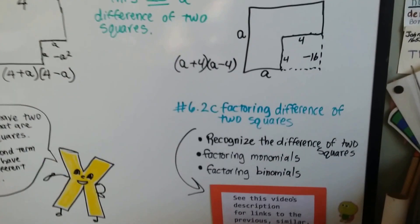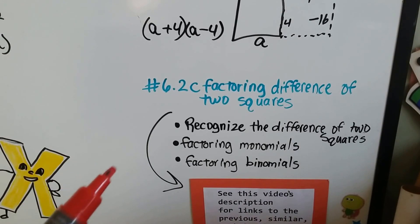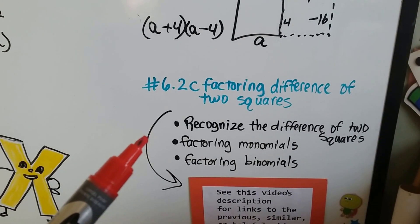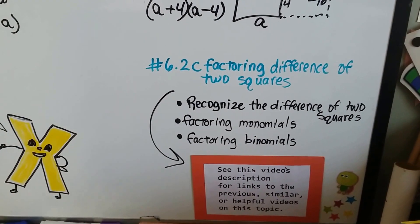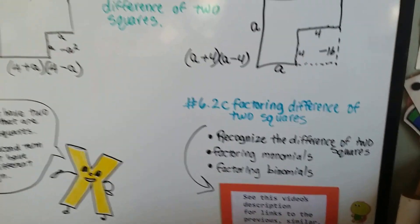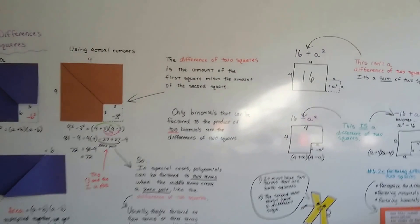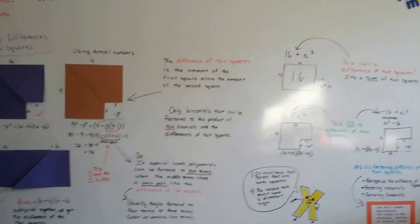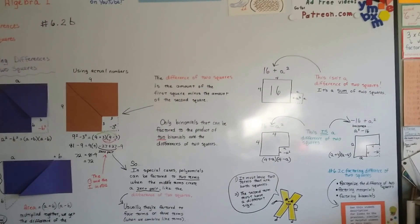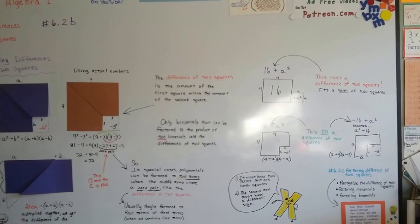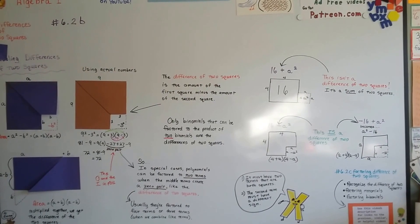Alright, so we're going to actually be factoring the difference of two squares mathematically in the next video in 6.2c. And the previous one, recognizing the difference of two squares, there'll be a link in this one's description. And I'll put a link for factoring monomials and factoring binomials in there to help you out. Alright, I hope this modeling helped you, because now you can actually picture what's going on. And pardon my sunshine, it's a beautiful day outside. And now you can really see what's going on, what we're doing when we're finding the differences of two squares. We're actually finding the differences of two squares. Alright, I'll see you in the next video. Bye! Bye!